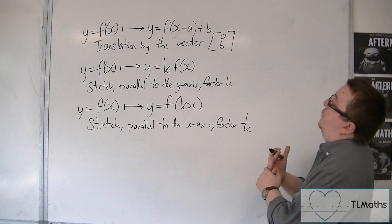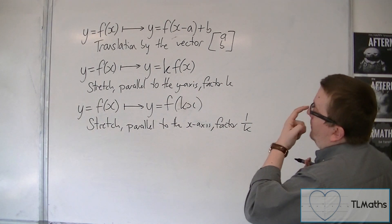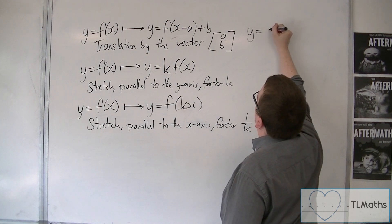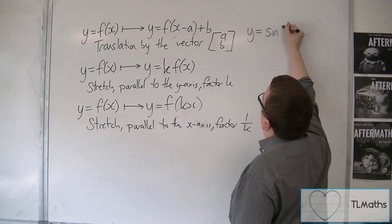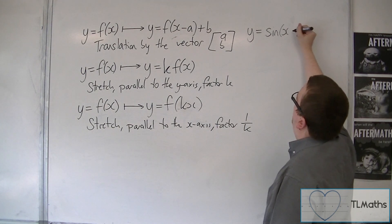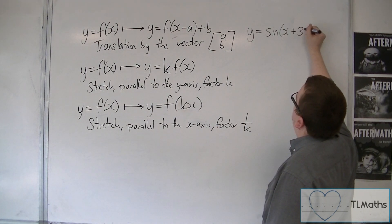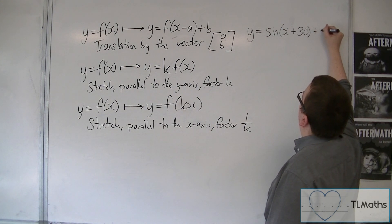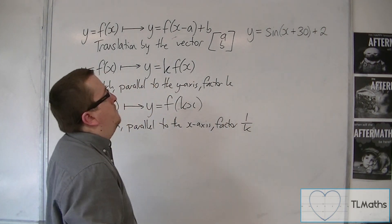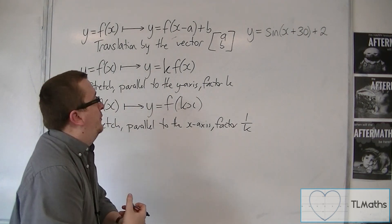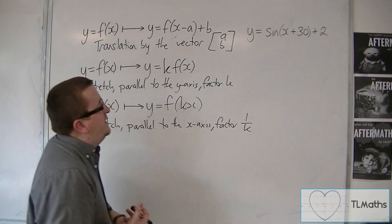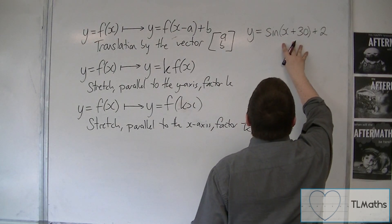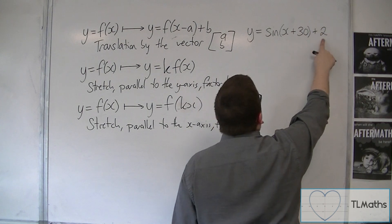So first of all, if I had y = sin(x + 30) + 2, working in degrees, then this would identify that this is a translation of the curve y = sin(x) by the vector (−30, 2).